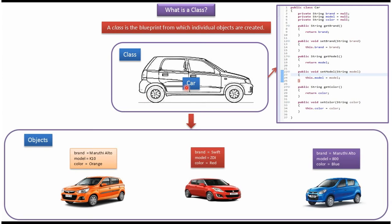Using the class Car blueprint we can create individual car objects. Here I have created three car objects. The first car object has brand Maruti, model K10, and color orange. The second car object has brand Swift, model ZDI, and color red. The third car object has brand Maruti, model 800, and color blue.